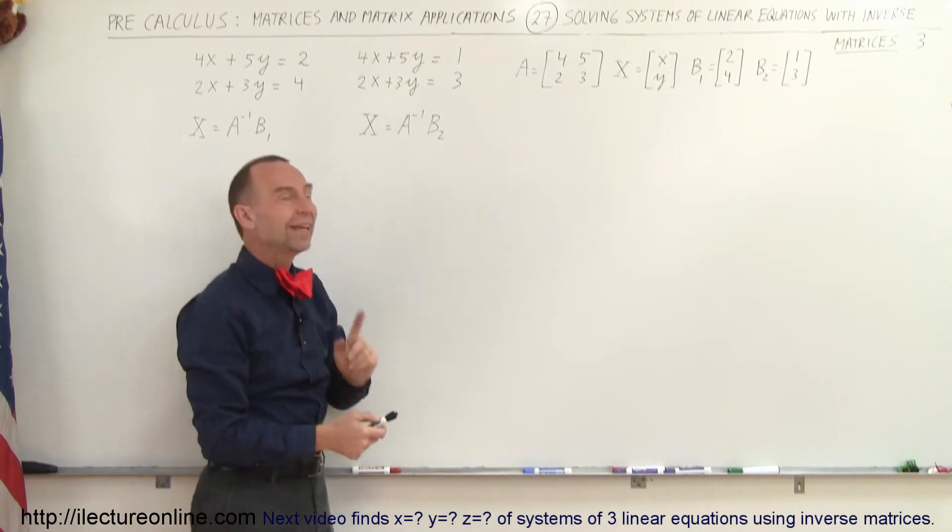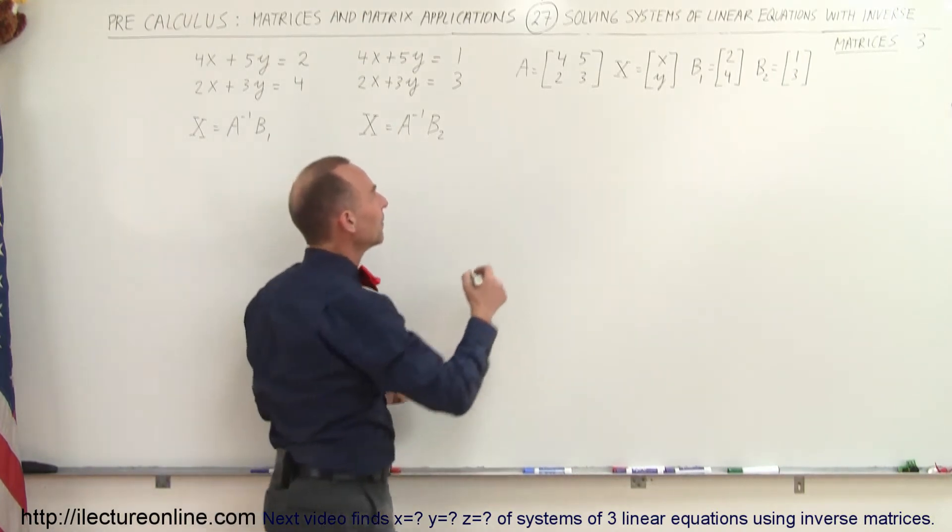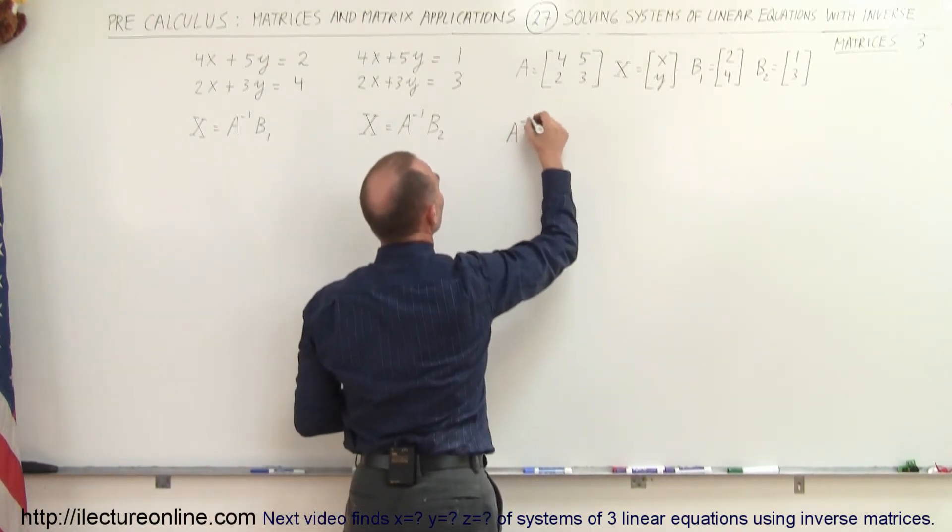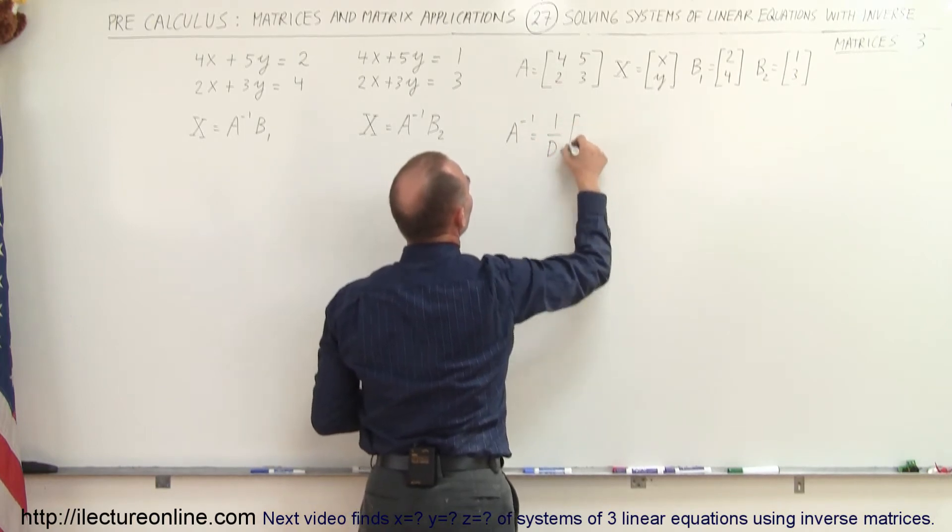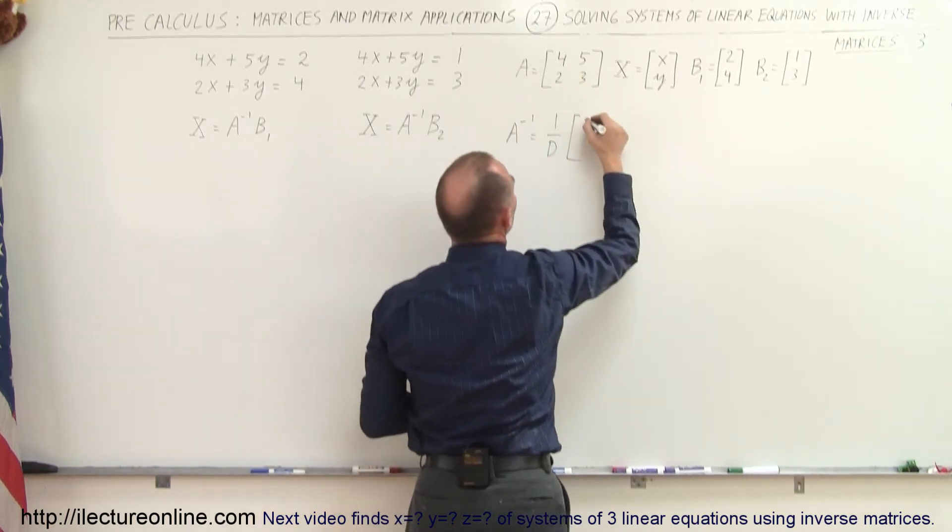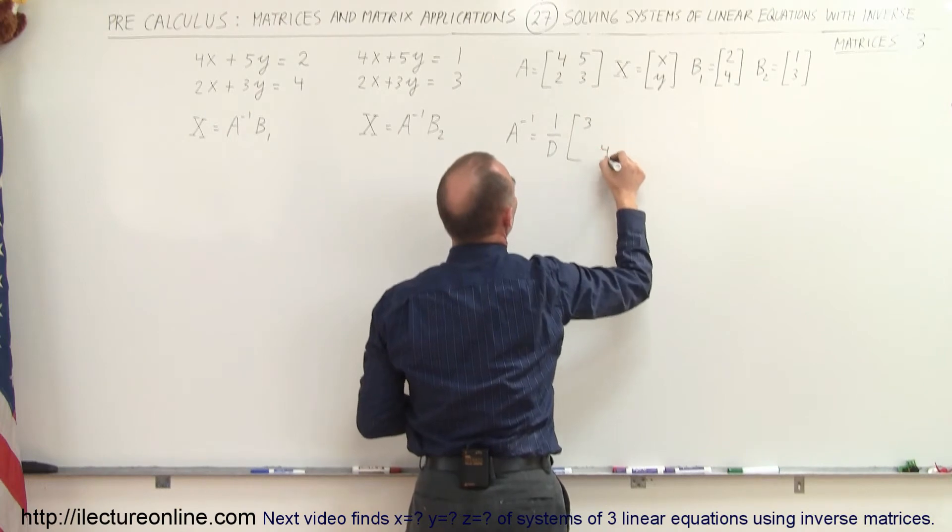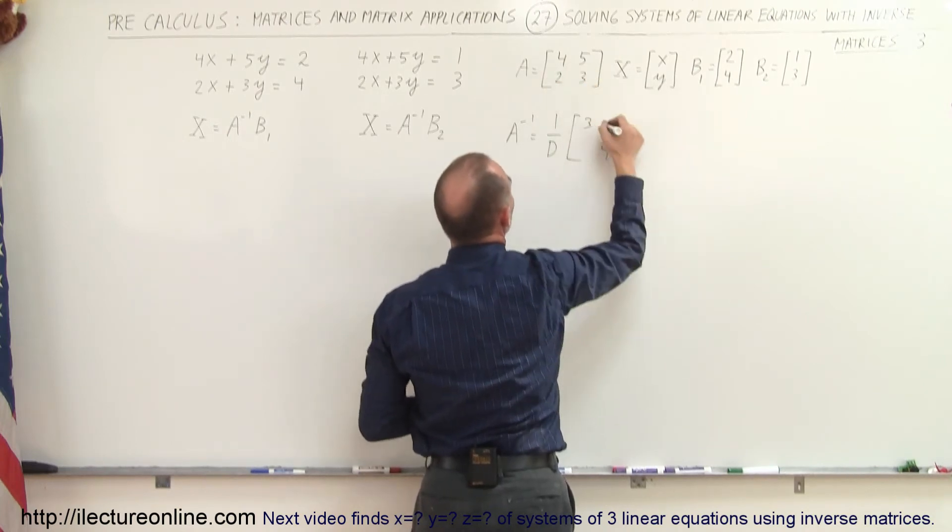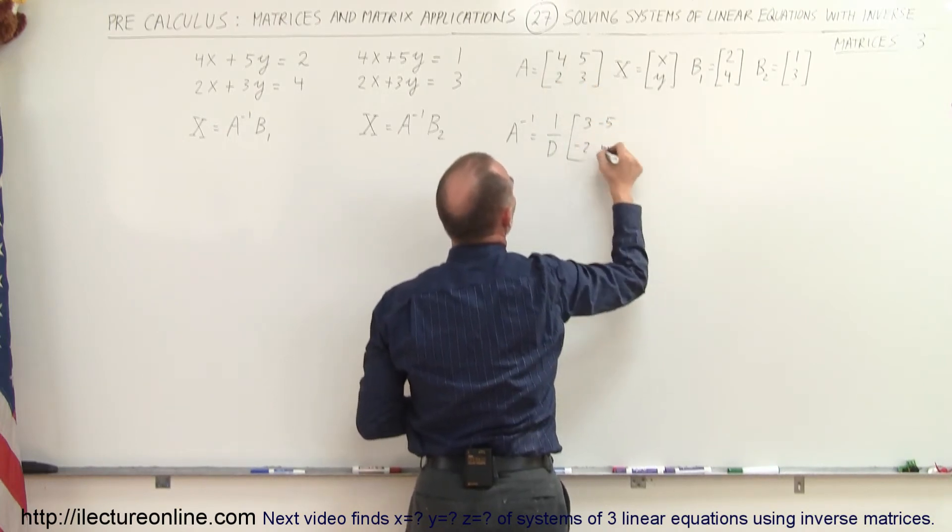So what we're going to do first is find the inverse of A. So the inverse of A is going to be equal to 1 over the determinant times the matrix where 3 and 4 interchange. So the 3 goes up there, the 4 goes down here, and the 2 and 5 will now become minus 5 and minus 2.